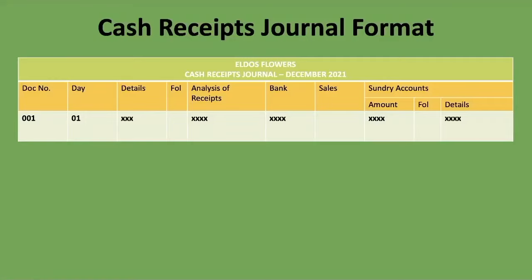Then you've got what is called the folio, or 'fol.' This is a cross-reference code — usually a number or combination of numbers and letters — used for connecting two different records, showing where else it is found or where it's coming from or going to. We're not going to worry much about this column when doing the cash receipts journal.